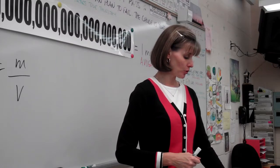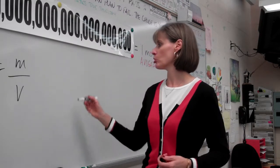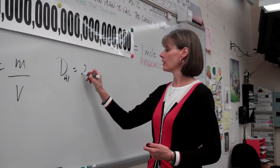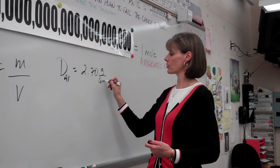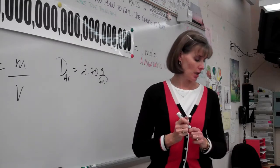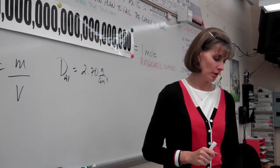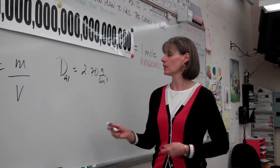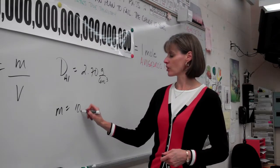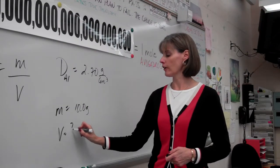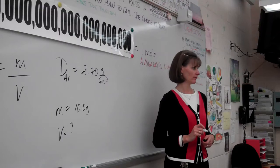If, in number 21, I tell you that the density is, say, let's do aluminum because that's the only one I have in my head right now. Density of aluminum is 2.70 grams per centimeter cubed, and I am going to give you a mass, and let's say the mass is 10.0 grams. What are you going to do to find the volume? What are you going to do to find the volume?